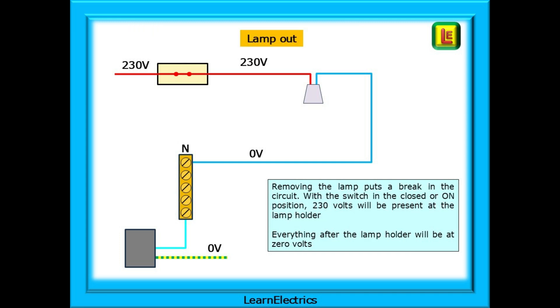Taking the lamp out will have the same effect as turning the switch off. Removing the lamp puts a brake in the circuit. With the switch in the closed or on position and the lamp out, 230 volts will pass through the switch and voltage will be present at the lamp holder where it stops. Everything after the lamp holder will be at 0 volts.